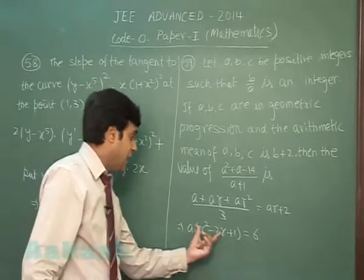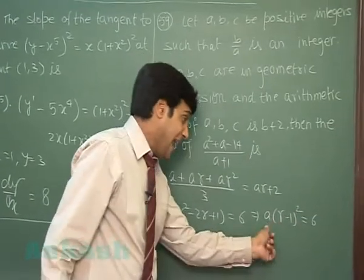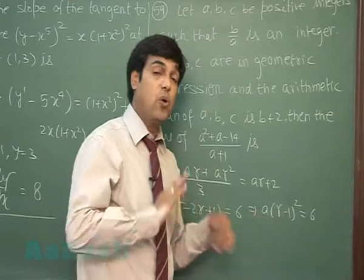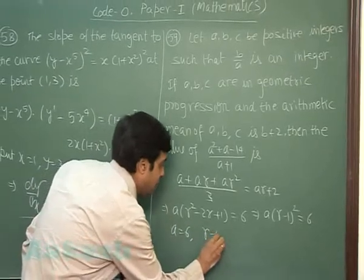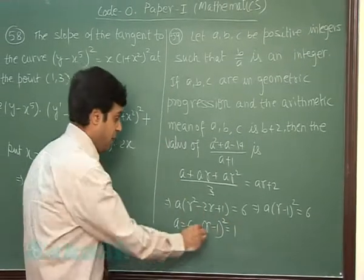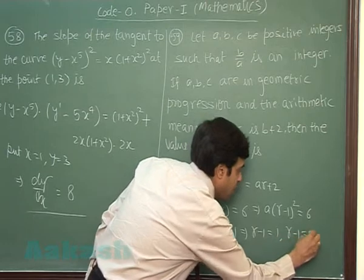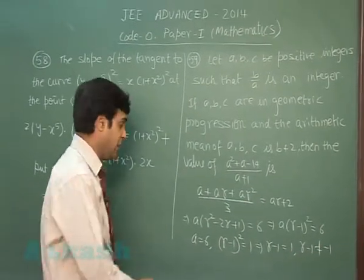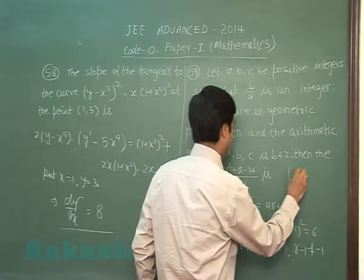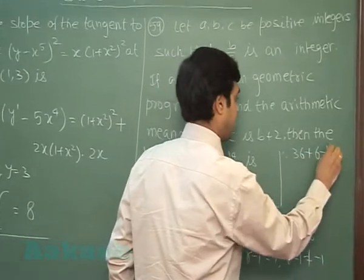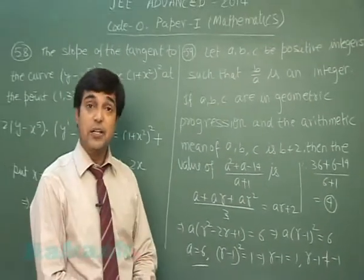This is a perfect square: a(r - 1)² = 6. For integer solutions, a must be 6 and (r - 1)² = 1, giving r = 2 (since r = 0 is not valid). Putting a = 6, we evaluate the expression to obtain (36 + 6 - 14)/(6 + 1) = 4.